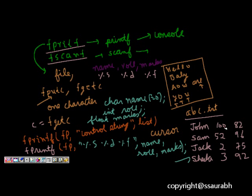So now we had a database where we were reading John, 100 marks, 82, role number, etc. So now let's say fscanf. So again if I am reading from the file, I will say okay which file, so I will pass the file pointer.